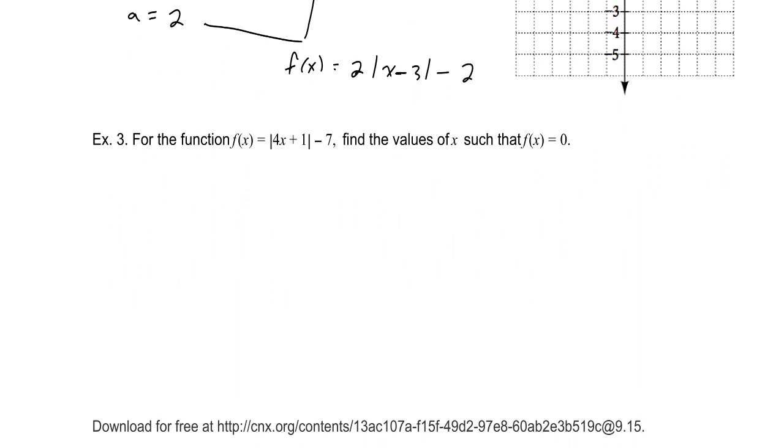For the function f(x) equals the absolute value of 4x plus 1 minus 7, find the values of x such that f(x) equals 0. So to find those values of x, we want our output to be 0. If our output is 0, absolute value of 4x plus 1 minus 7, we need to isolate our absolute value. Adding 7 to both sides, we get the absolute value of 4x plus 1 is equal to 7.